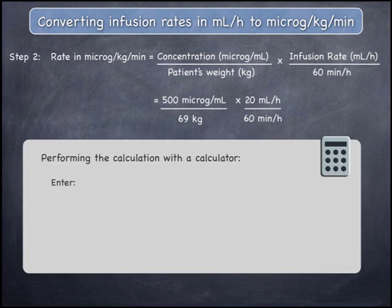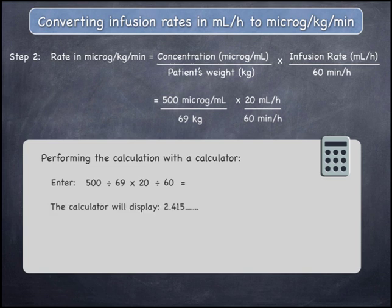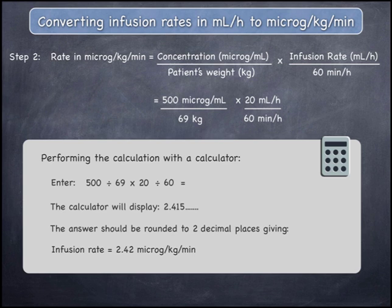To perform this on a calculator, enter 500, divided by 69, multiplied by 20, divided by 60, and then press equals. The calculator will display an answer of 2.415. The answer should be expressed to two decimal places, and therefore the final answer is a rate of infusion of 2.42 micrograms per kilogram per minute.